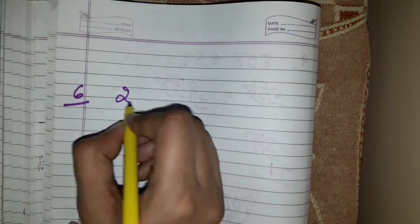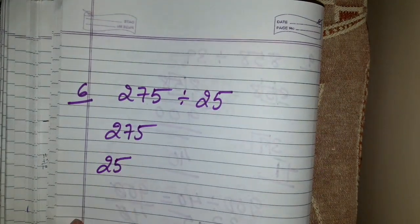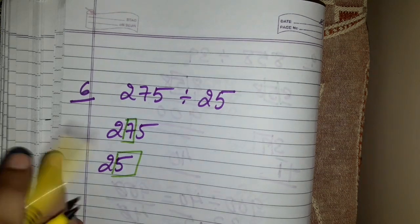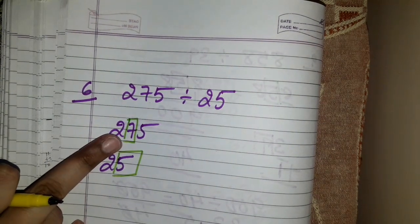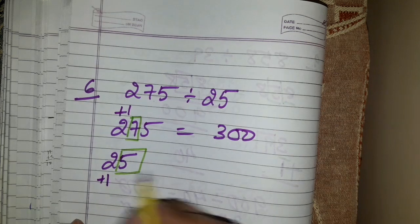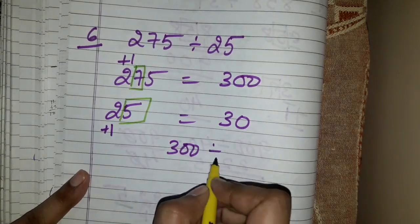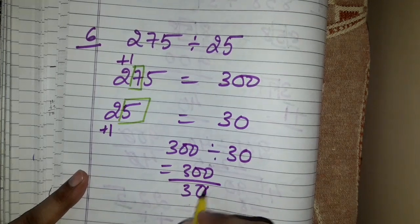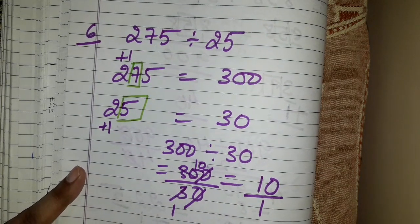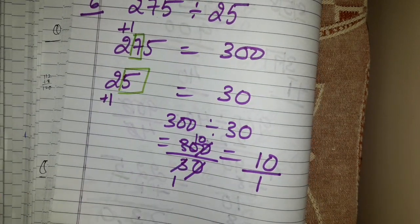Example: 275 divided by 25. Round 275 to nearest 100: digit 7 is more than 5, so it becomes 300. Round 25 to nearest 10: digit 5 meets the rule, so it becomes 30. Divide 300 by 30: the answer is 10 directly as a whole number, so no further rounding needed.